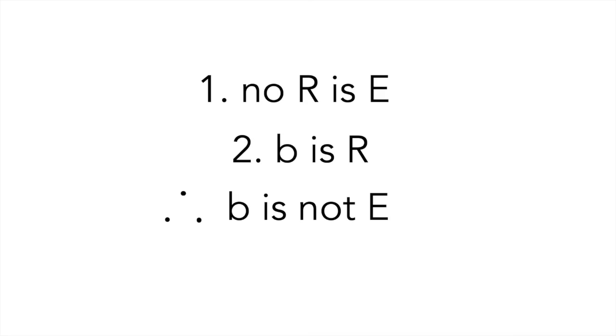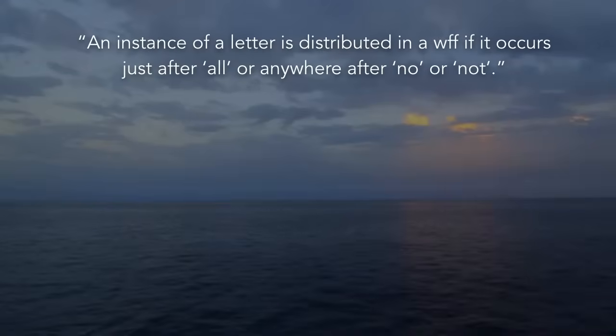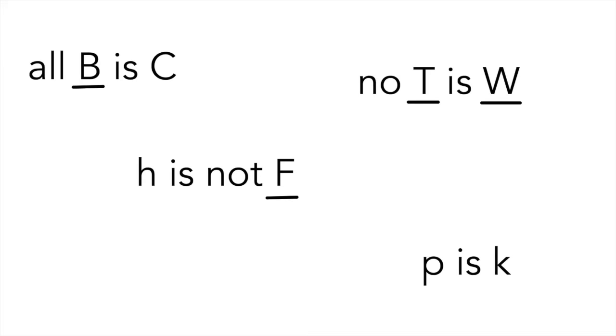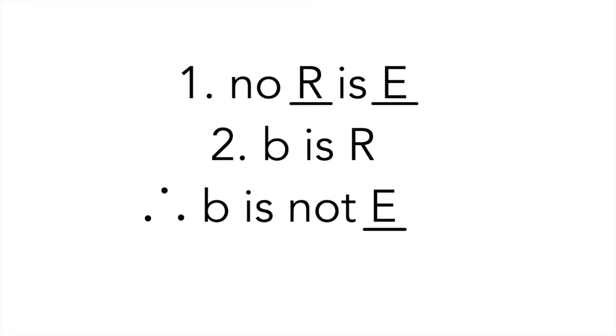Next, we want to underline any letter that is distributed, but what does it mean for a letter to be distributed? An instance of a letter is distributed in a woof if it occurs just after all, or anywhere after no or not. So, here are some examples of distributed letters and woofs that are underlined. Again, pause the video if need be, but let's now look at our example. Since our first woof starts with no, any letter after that is distributed, so we underline both the R and the E. Our next line has no distributed letters according to our rules, so nothing gets underlined. Finally, for our conclusion, B is not underlined, but E is because it comes after the word not, so our syllogism with underlined distributed letters should look like this.